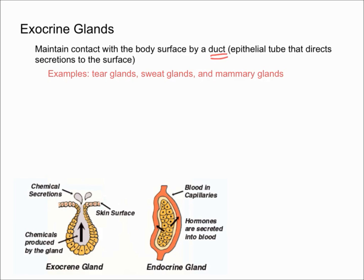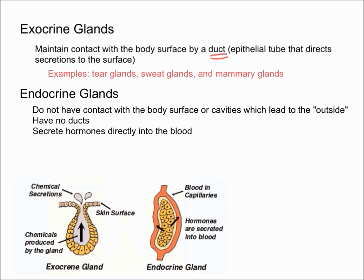Now let's talk about what endocrine glands are. In contrast, endocrine glands do not have contact with the body's surface or cavities which lead to the outside. Additionally, endocrine glands do not have ducts. Most importantly, endocrine glands secrete hormones directly into the blood. These hormones function as chemical messengers, they have target cells somewhere else in the body, and blood acts as the transportation. Some examples of endocrine glands in your body are your pituitary, your thyroid, and your adrenal glands.